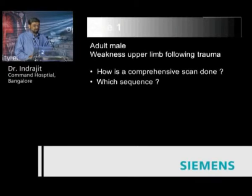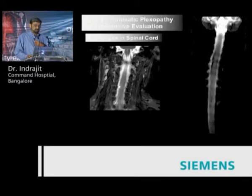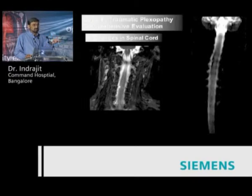Consider an adult male with weakness of the upper limb following trauma. The initial question is how a comprehensive scan is done and what sequences are to be used. A comprehensive image starts with analysis of the spinal cord, because the nerve roots of C5 to T1 are attached to the cord, and any avulsion, rupture, or traction injury pulls them from the spinal cord. Hemosiderin staining and lesions in the cord at the site very close to the attachment of the roots are very important points to be analyzed and conveyed to the surgeon.